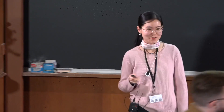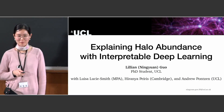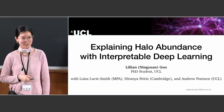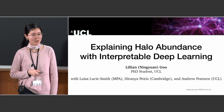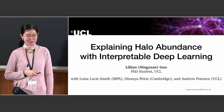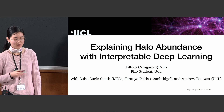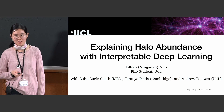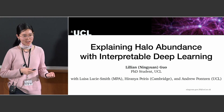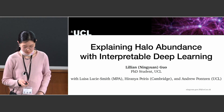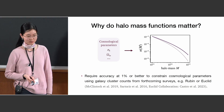Thank you for giving me the opportunity to present here. I'm Lillian Guo, a PhD student at UCL, and today I'll be talking about the work that I'm doing with Louisa Lucy-Smith and Andrew Ponson on using interpretable deep learning to understand what dictates the halo mass function, which gives the abundance of dark matter halos as a function of their mass.